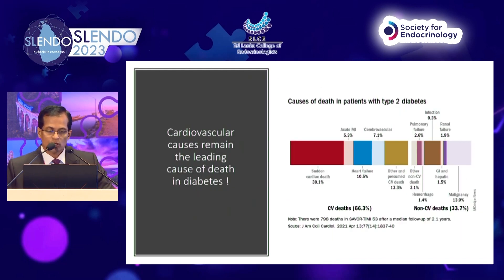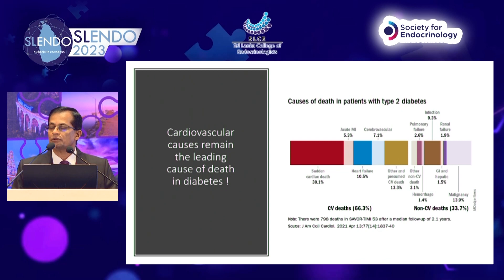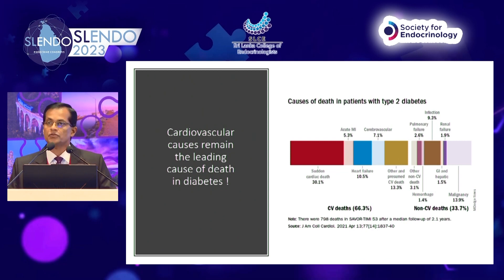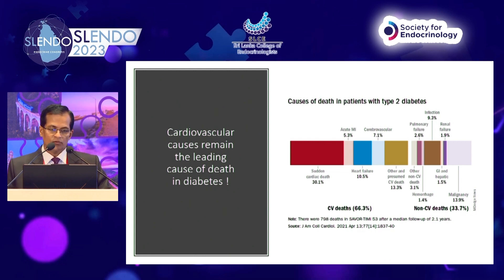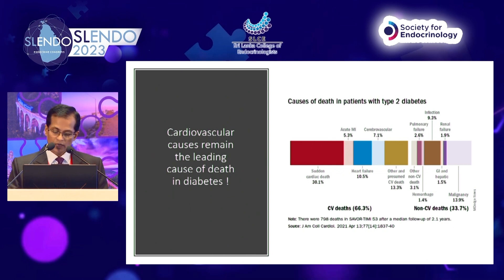Ladies and gentlemen, when you consider cardiovascular risk, we all know that the majority of patients with type 2 diabetes are dying with cardiovascular disease. If you put it all together, about 66% of patients with diabetes will die with cardiovascular disease. Therefore cardiovascular disease remains the leading cause of death in diabetes, and if you need to reduce mortality you need to address this issue promptly.